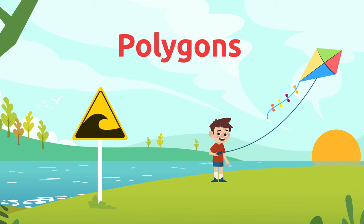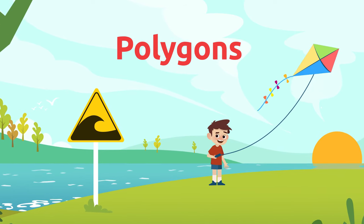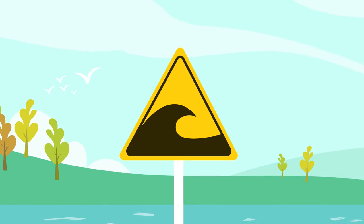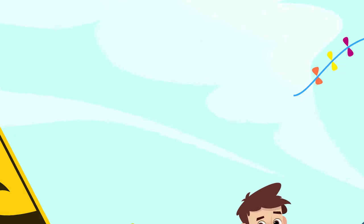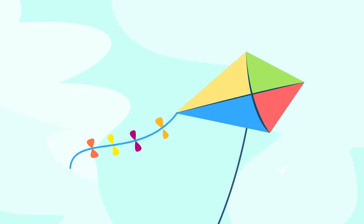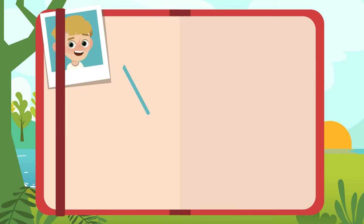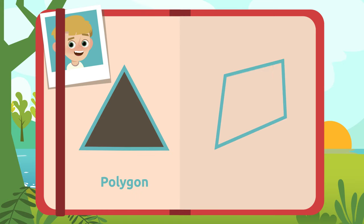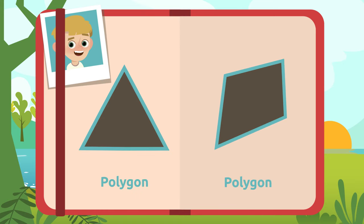Those geometric shapes found everywhere. Can you see that sign over there? Look at that kite! I'm going to draw them in my sketchbook. Wow! All these objects are polygons!